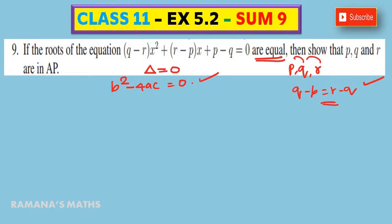So, the x² coefficient is equal to a. Therefore, small a is equal to q - r. Small b is equal to r - p. Then, constant term c is equal to p - q.